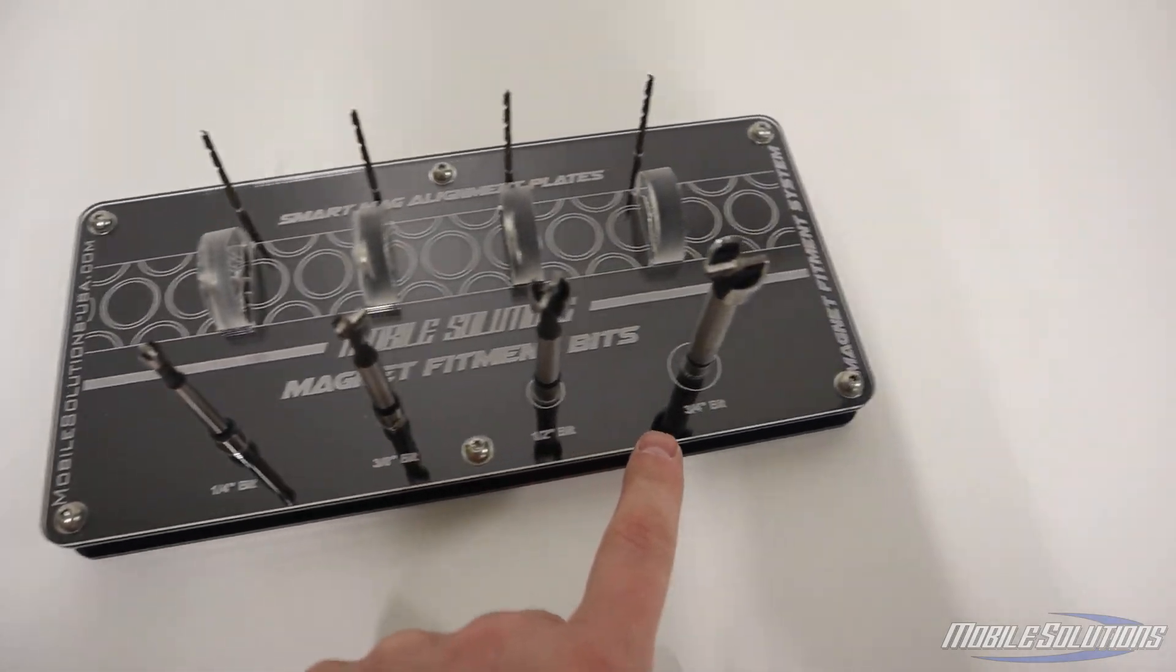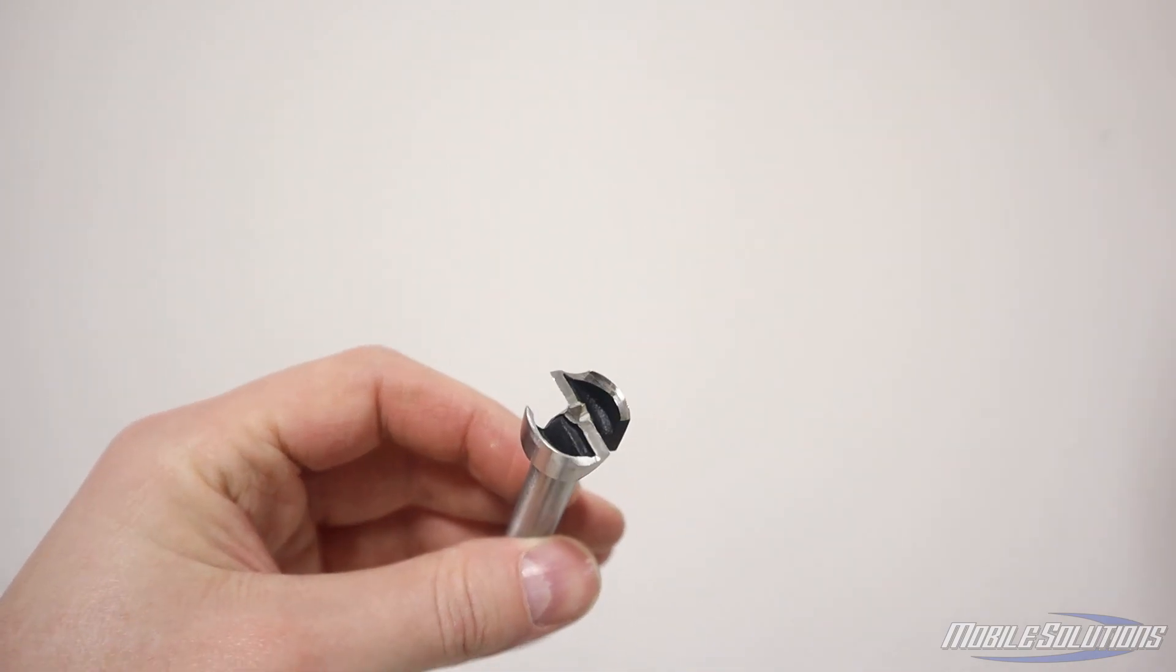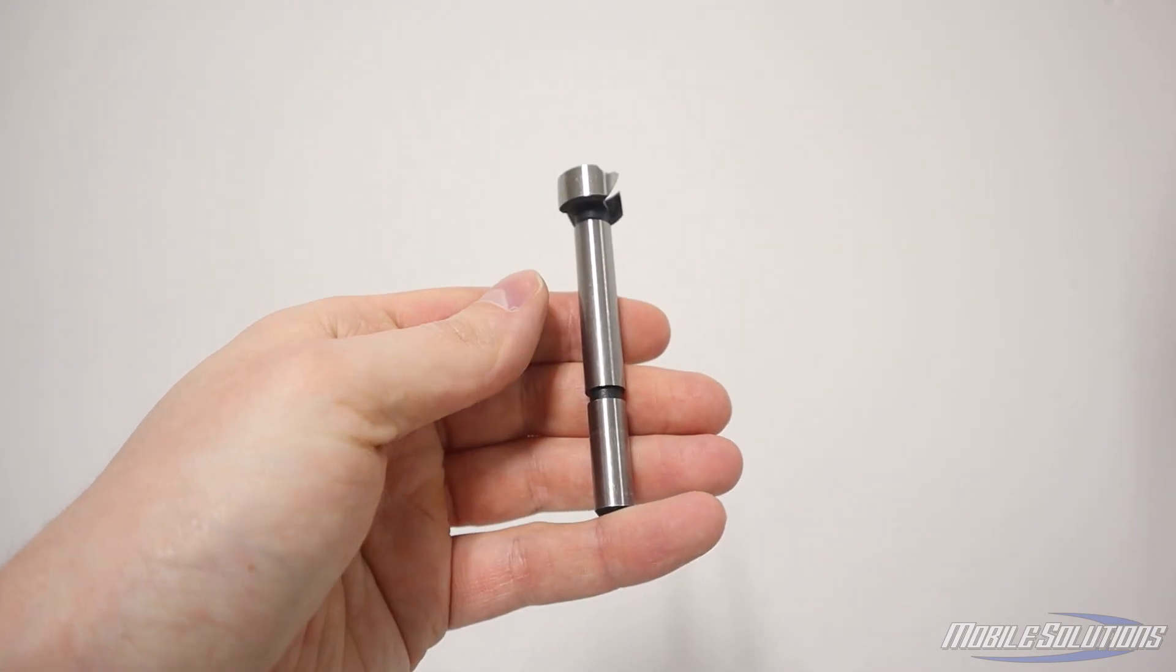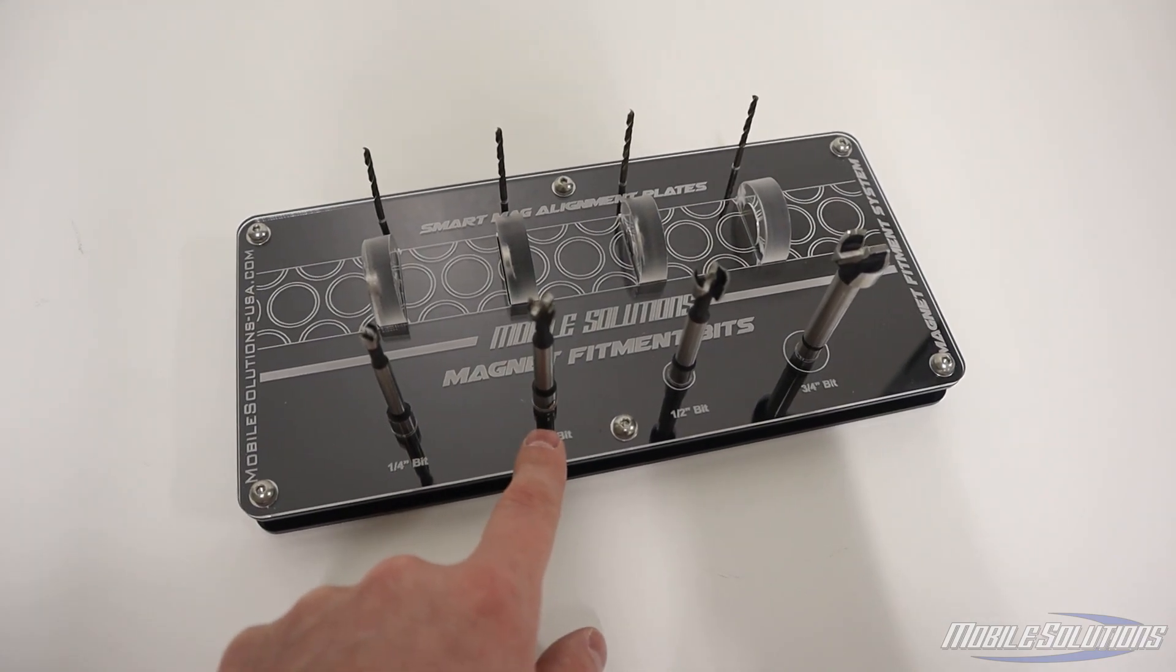Finally, there are four different sizes of magnet match countersink bits. Now I want to stress something here that is really important. These are not off-the-shelf bits.